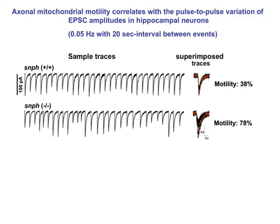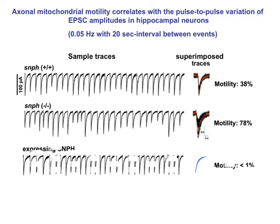A larger variability was observed in syntaphilin mutant neurons. Conversely, over-expressing syntaphilin stops mitochondrial transport and reduced variation found in wild-type neurons. The EPSC amplitude will average through summation of the currents from multiple synapses between neuron pairs, in which each terminal takes different patterns of mitochondrial distribution and motility, and those patterns can change dynamically over time.